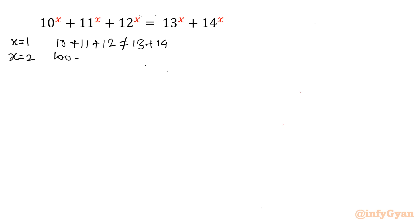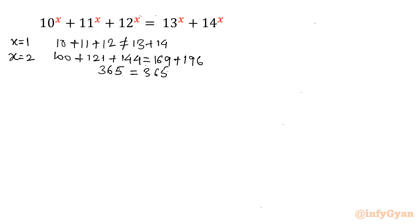For x = 2: 100 + 121 + 144 = 169 + 196. Left side: 121 + 144 = 265, plus 100 = 365. Right side: 169 + 196 = 365. It is true! That means x = 2 is one solution.